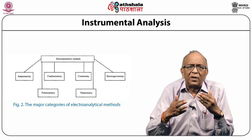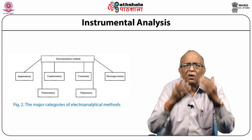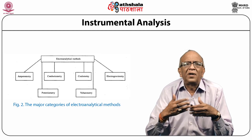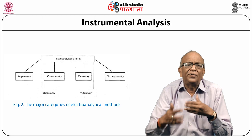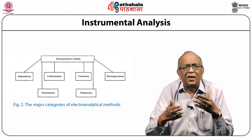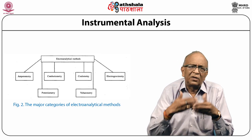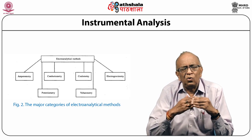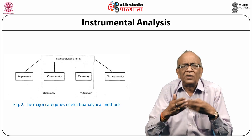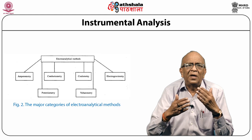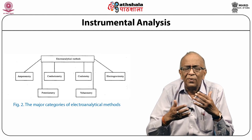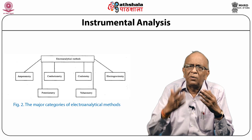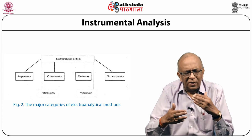Another type of technique is coulometry — the measurement of coulombs. Either we may keep constant potential (coulometry at constant potential), or keep the current constant (coulometry at constant current). When we do coulometric titrations at constant current, they are termed coulometric titrations. Another type is conductometry, meaning the measurement of conductance. By manipulations or combinations of these three parameters — potential, current, and coulombs — we may have a number of techniques.